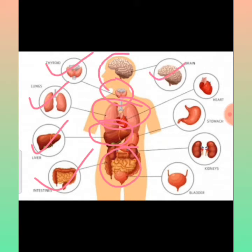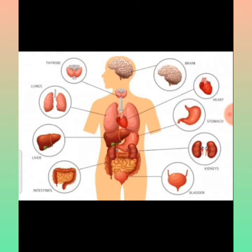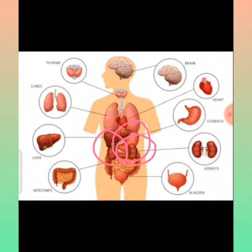More internal organs are: brain, heart, stomach, and kidneys. Kidneys look like kidney beans — rajma. These are all internal organs.